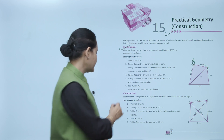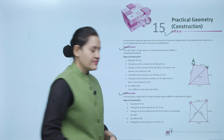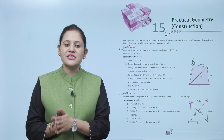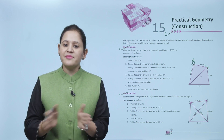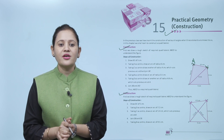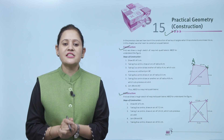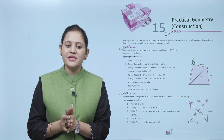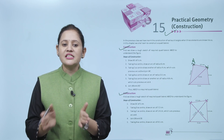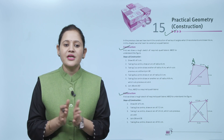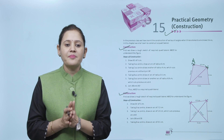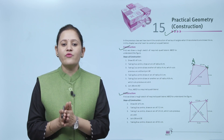Next is another construction. First, we draw the rough sketch of the required quadrilateral ABCD to understand the figure. Steps of construction: draw DC = 5 cm. Taking D as a center, draw an arc of 7.2 cm. Taking C as a center, draw an arc of 5.4 cm which cuts the previous arc at B. Join DB and CB. Taking B as a center, draw an arc of 4.5 cm.